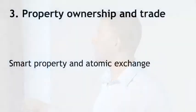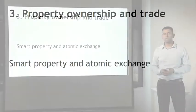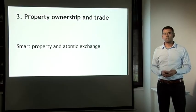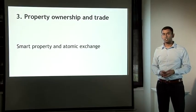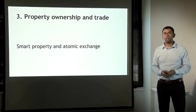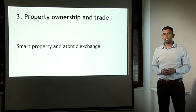The third category is property ownership and trade, which is what we started by looking at. We can decentralize that using smart property and atomic exchange. Ownership and trade are related — they're not quite the same thing, but you can't completely separate them. The discussion at the beginning of the lecture should give you a good understanding of how to decentralize this.